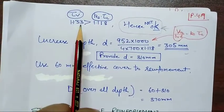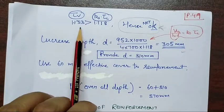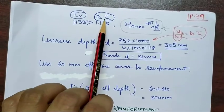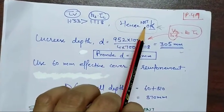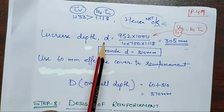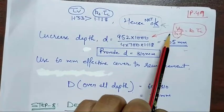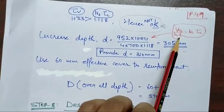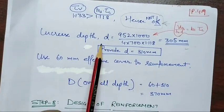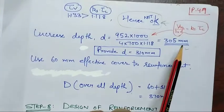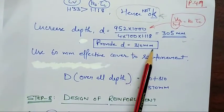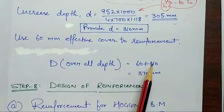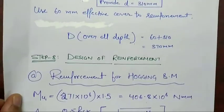From the check of punching shear, we found that τv is greater than ks·τc, so the check is not okay. We are calculating the depth on the basis of τc from the relation: Vu2 divided by b0 into d equals ks into τc. The depth d is calculated as 305 mm, and we are providing approximately 310 mm. Using 60 mm cover to reinforcement, the overall depth is 60 plus 310 equals 370 mm.